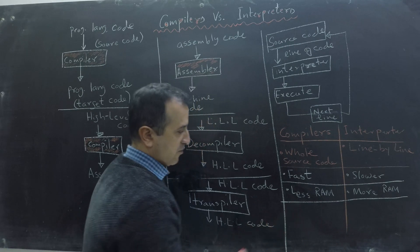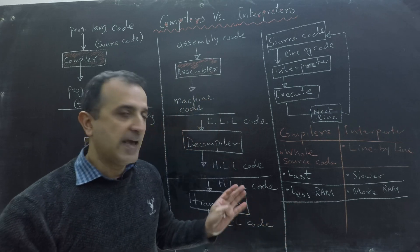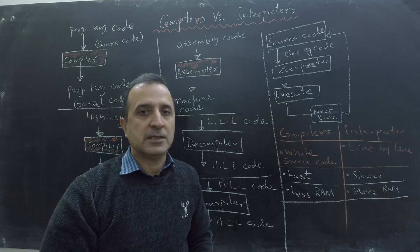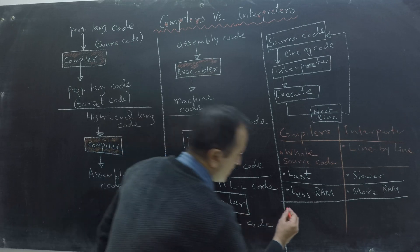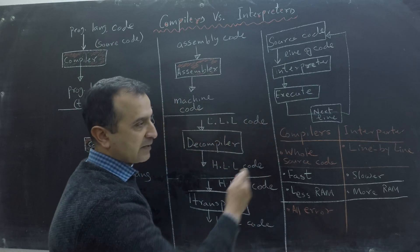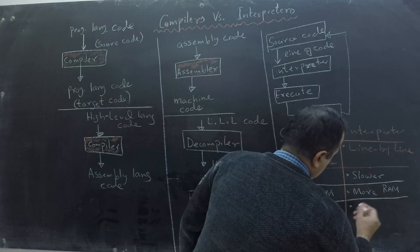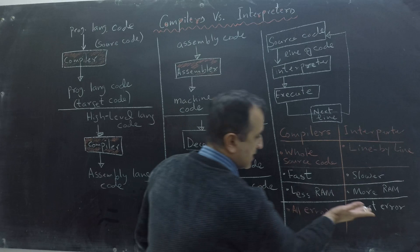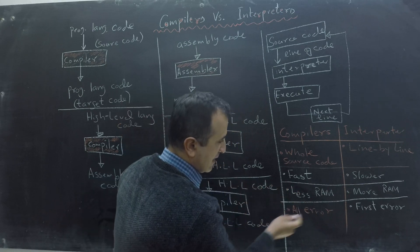One reason we want to use an interpreter is because some people prefer its debugging style. Compilers try to find all the errors in the code, and in order to do that, they have to make some assumptions. Because of those assumptions, the errors reported by a compiler might not be exact or precise. An interpreter, on the other hand, stops working at the first line of code it cannot interpret, so it reports the exact error at that line. People like this because the error is much more precise — you know exactly what's wrong and can fix it. So for debugging, some people prefer the interpreter.